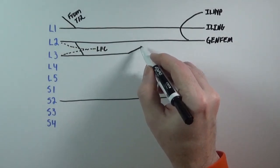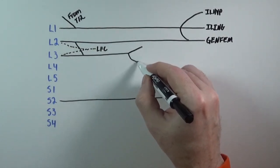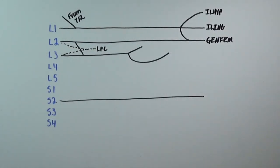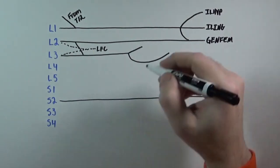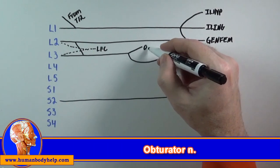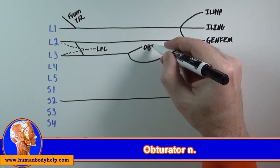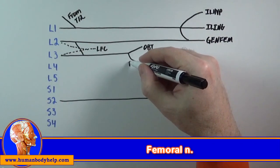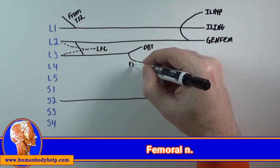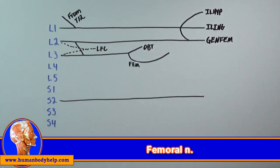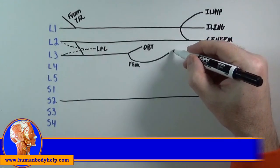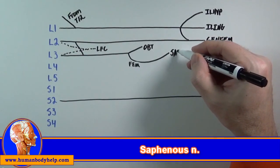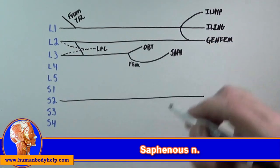Off the end of L3, we'll draw branches that resemble a can opener. The top part will be the obturator nerve, which will run through the obturator foramen to supply the adductors of the thigh. The bottom part will be the femoral nerve, which will supply the muscles of the anterior thigh. One of the branches off the femoral nerve will be a long, thin nerve that runs with the great saphenous vein, the saphenous nerve.